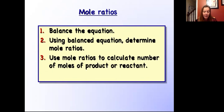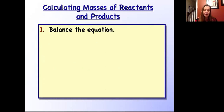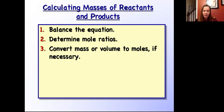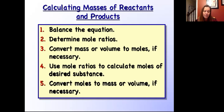Now we're going to build to the next step: using what we've learned about converting from mass or volume of a reactant or product to moles, then using mole ratios to go from moles of one compound to moles of another, and then back to mass. So stoichiometry is just going from mass of one thing to mass of another. Our steps: first, balance the equation; use it to determine mole ratios; convert the mass or volume given to moles; use mole ratios to calculate moles of the desired substance; then convert those moles to mass or volume if necessary.